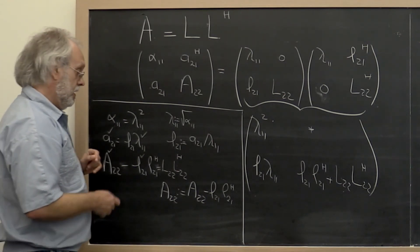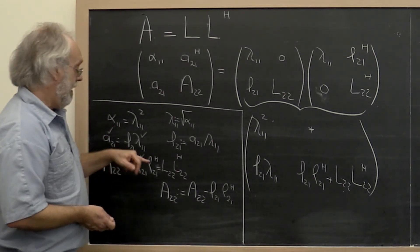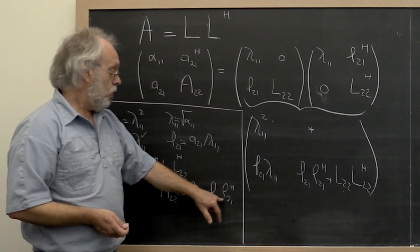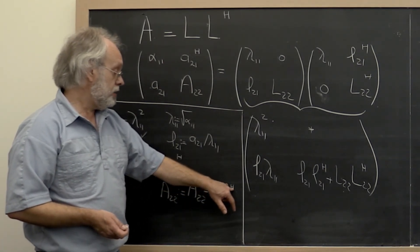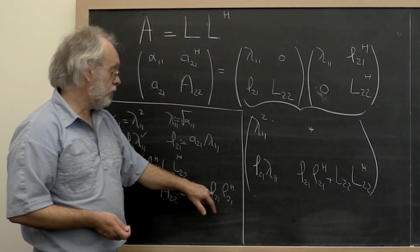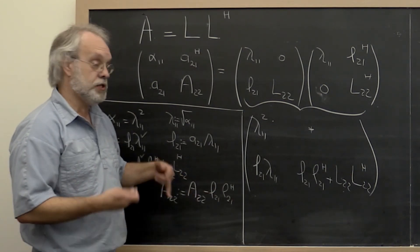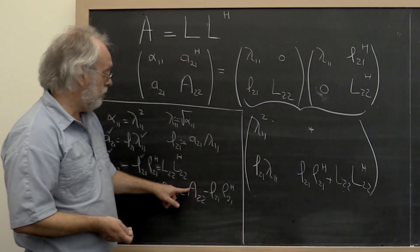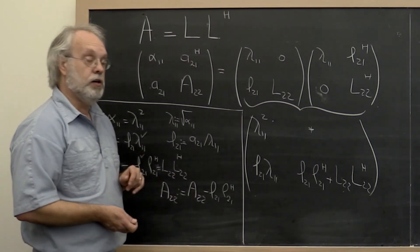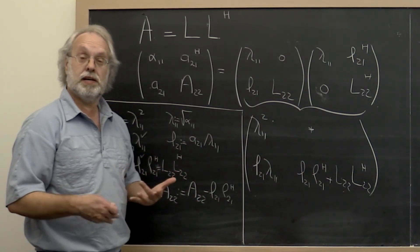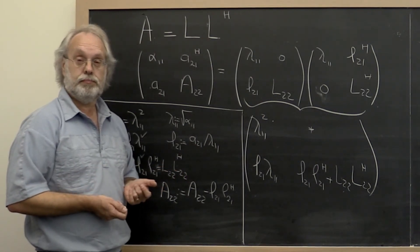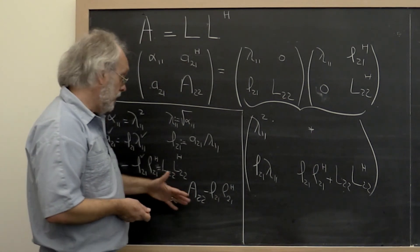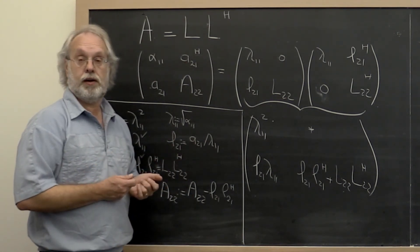That's one observation. The other observation is that A_2,2 is Hermitian. L_2,1 times L_2,1 Hermitian transpose is Hermitian. If you subtract a Hermitian matrix from a Hermitian matrix, you get a Hermitian matrix. And therefore we really only need to update the lower triangular part of A_2,2. That's known as a symmetric rank-1 update. And this is why when we do our computation, we only need to update the lower triangular part.